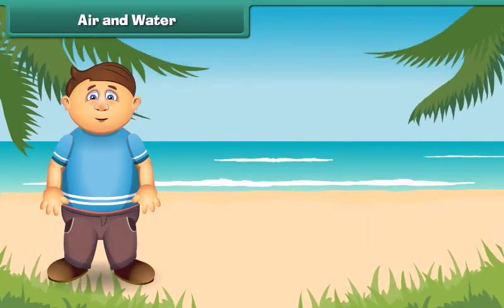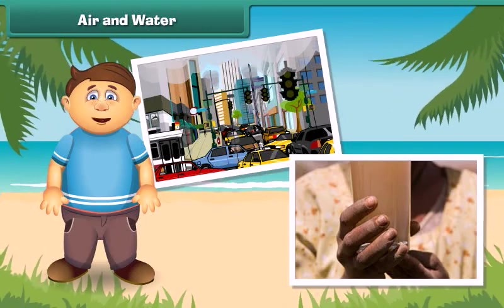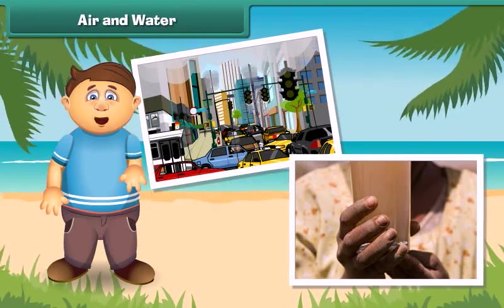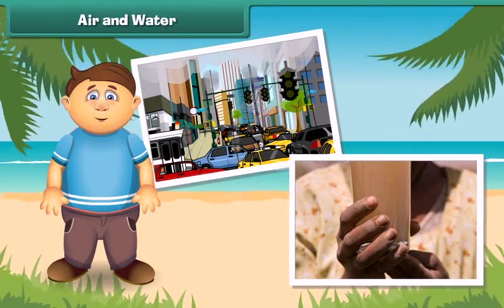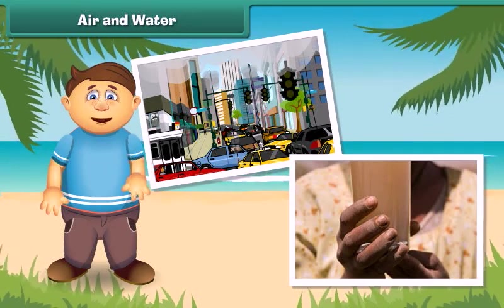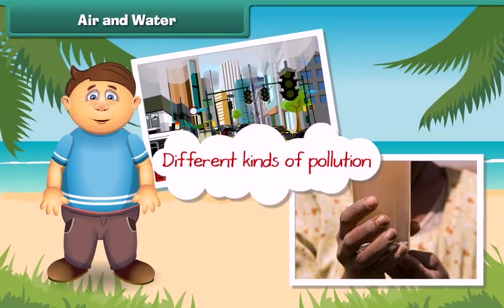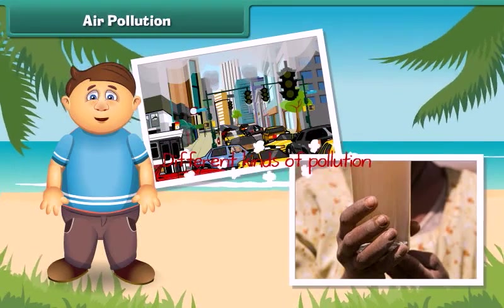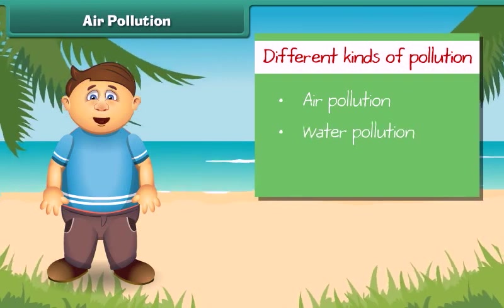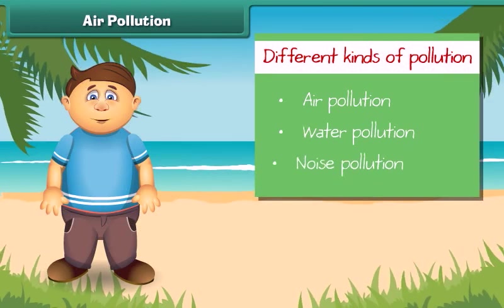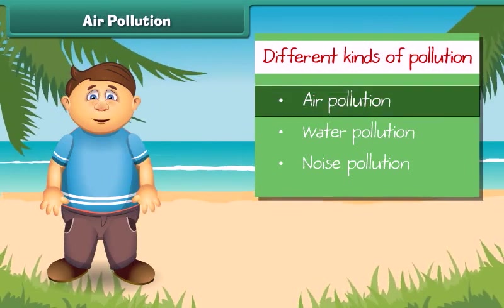As we all know, air and water mainly support life on the earth, but now these two are getting dirty day by day. As a result, there is no fresh air to breathe and clean water to drink. Pollution is mainly of three types: air pollution, water pollution, and noise pollution. Let's know about air pollution in detail.